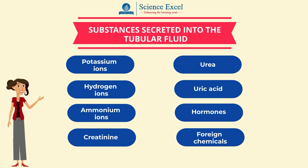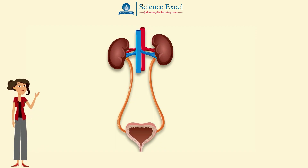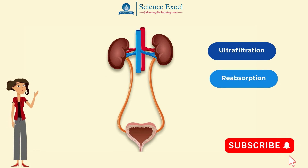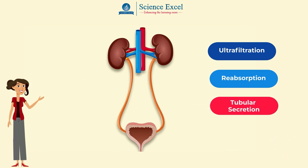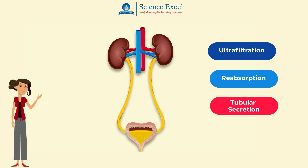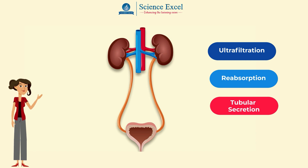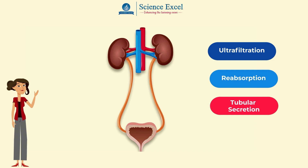The urine flows out of the nephron tubule into the collecting duct. Urine that is formed via the three processes of ultrafiltration, reabsorption and secretion leaves the kidney through the renal pelvis into the ureter, down to the urinary bladder, and is finally expelled out of the body. The urine produced is 95% water and 5% wastes such as urea, creatinine and variable concentrations of ions.